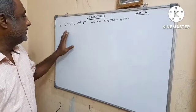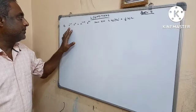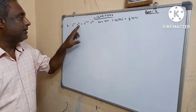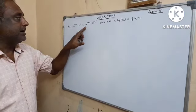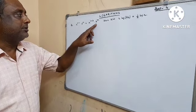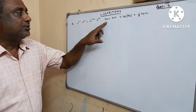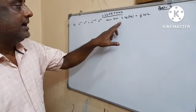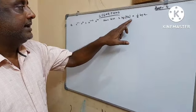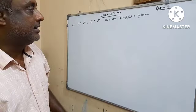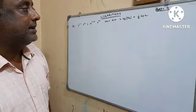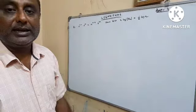A question has been given: a to the power (2 minus x) into b to the power 5x equals a to the power (x plus 3) into b to the power 3x. We have to prove that x·log(b/a) equals half·log(a).